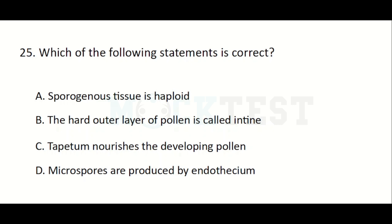Which of the following statements is correct? Option A: Sporogenous tissue is haploid. Option B: The hard outer layer of pollen is called intine. Option C: Tapetum nourishes the developing pollen. Option D: Microspores are produced by endothecium. The correct answer is Option C — Tapetum nourishes the developing pollen.